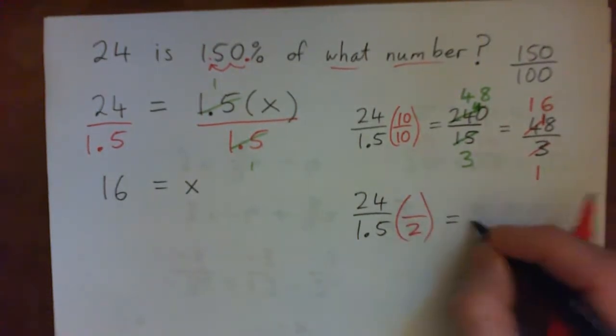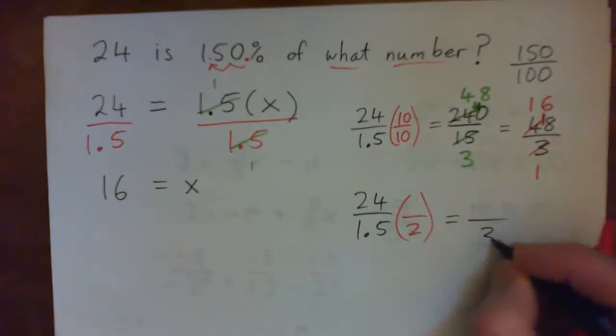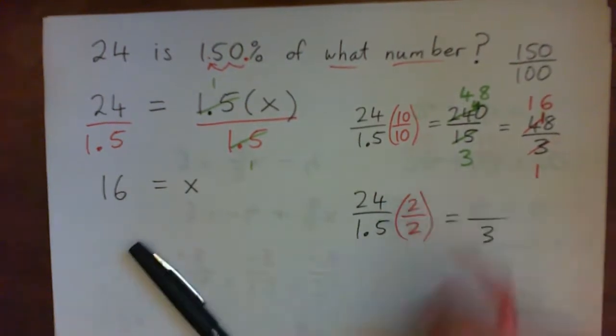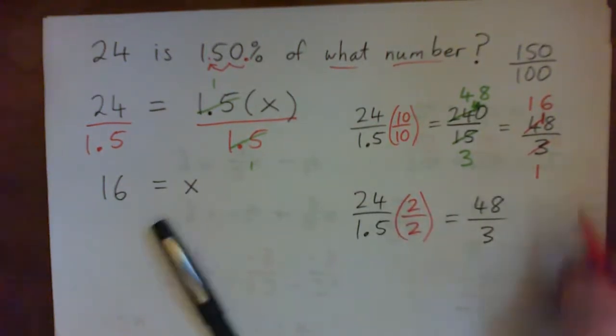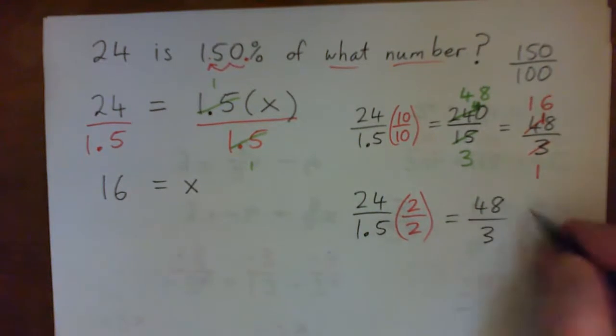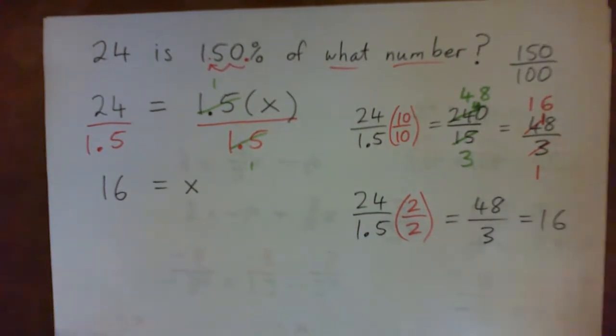If I multiply this by 2, then I'll get rid of the decimal because 2 times 1.5 gives me 3. So just for fun, we could have multiplied it by 2 over 2 and that would have given us 48 over 3. And as you know, 48 over 3 gives 16. So that was another way of doing it.